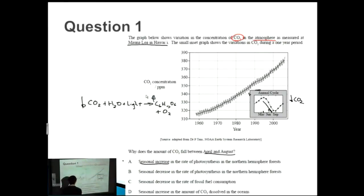How about B: a seasonal decrease in the rate of photosynthesis in the northern hemisphere forests. This one's exactly the opposite. If there was a decrease in the rate of photosynthesis, we'd expect the CO2 to go up because these products would be decreasing and then these products would be increasing. Straight away we know that B is incorrect.